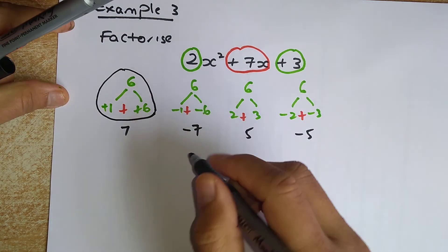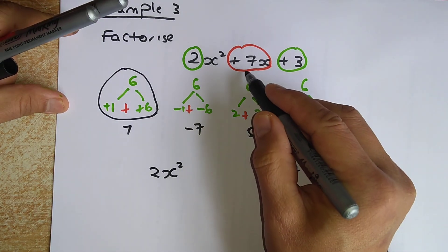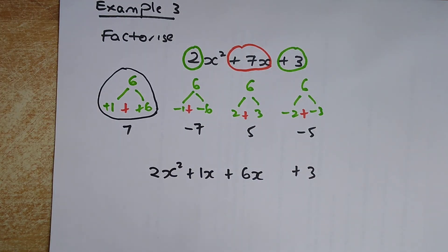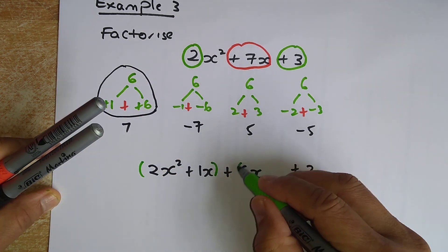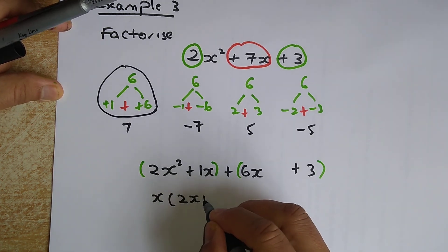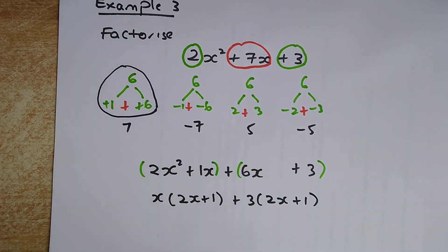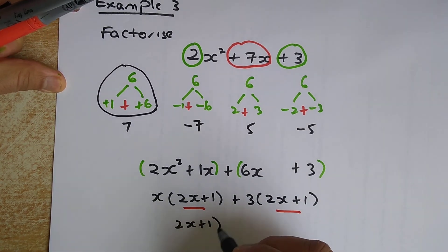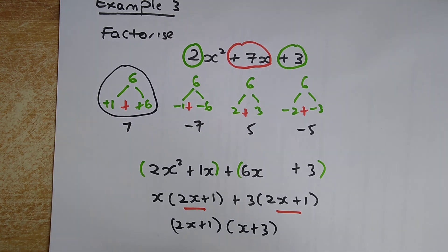Now the process is slightly different. We keep 2x squared and plus 3, and we break the 7x into plus 1x plus 6x. Next, we factorize the first two terms and the last two terms separately. The common factor of the first pair is x, leaving 2x plus 1. The common factor of the second pair is 3, also leaving 2x plus 1. Since 2x plus 1 is a common factor, we take it out: the result is 2x plus 1 times x plus 3.